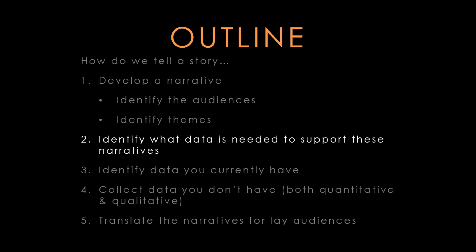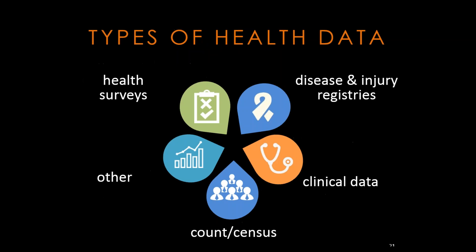Now that we've thought a little bit about how to craft our narrative — our story — and who those stories are focused on, let's talk about identifying what data is needed to support those narratives. Because this is part two, in part one of the series we went over some categories of types of health data you might get from the Department of Public Health or other partners. The categories were health surveys, disease and injury registries, clinical data, and count or census data.